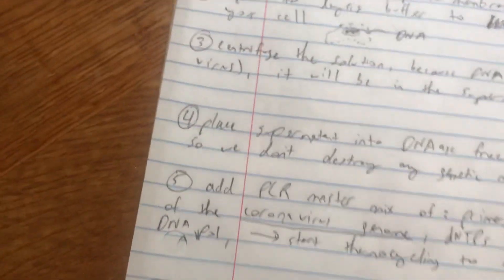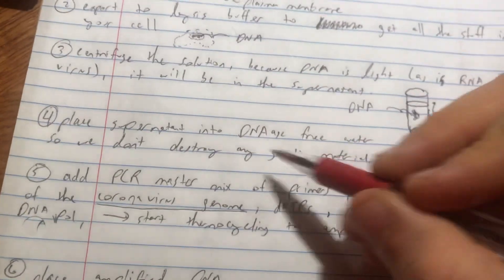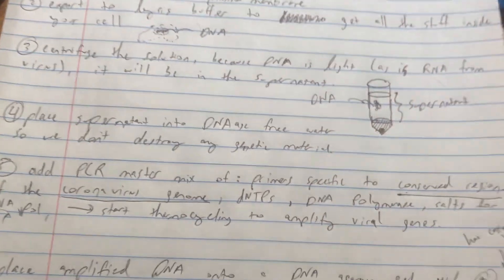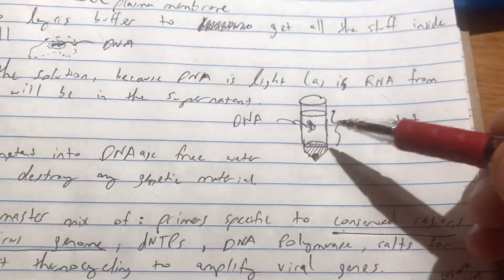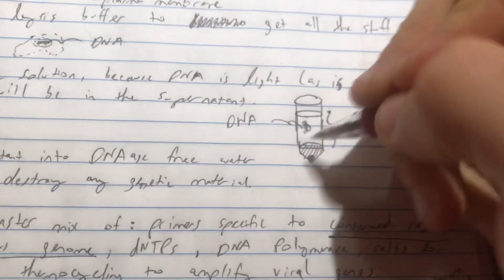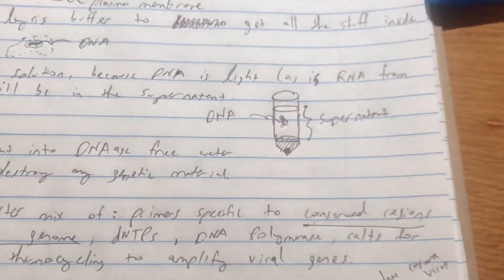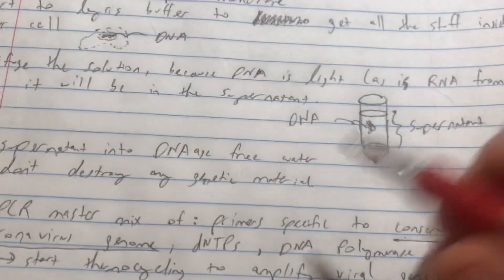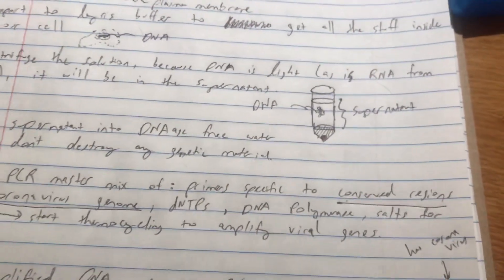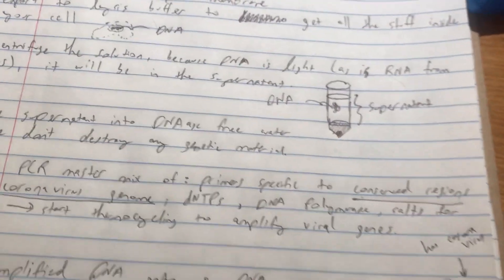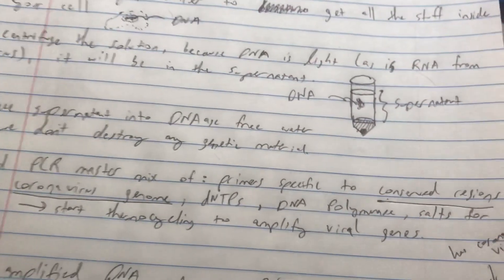What we do next is we're going to place this supernatant into DNase-free water. DNase-free water is important because basically if you have viral genes present in your supernatant, the last thing we want to do is actually denature any of these things. So having DNase-free water means that we're not going to run the risk of actually destroying any of the precious genetic material we're trying to test for.